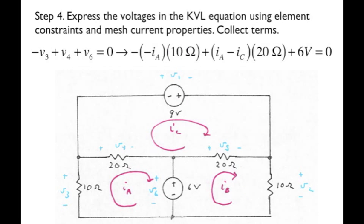The fourth step in our process is to express the voltages in that KVL equation in terms of mesh current properties and element constraints. For example, in mesh A, what's that voltage V3? By Ohm's law, V equals IR, or V3 equals 10 ohms times the resistor current. Using passive sign notation for the resistor current reference arrow direction, the current is minus IA.